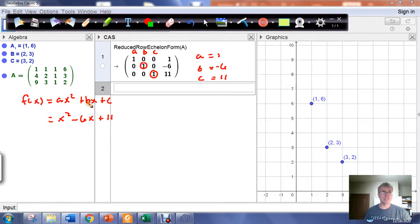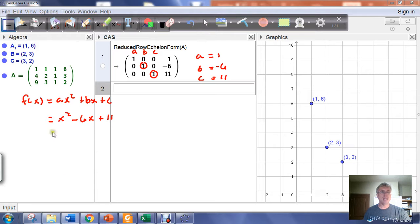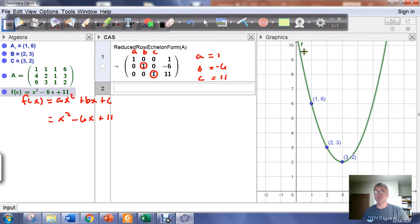The check on our work is to take that model, this quadratic function we have, and come down to the input bar and type it in. f(x) = x² - 6x + 11. If we did it correctly, our quadratic function should fit the three points to which we were trying to fit a curve.